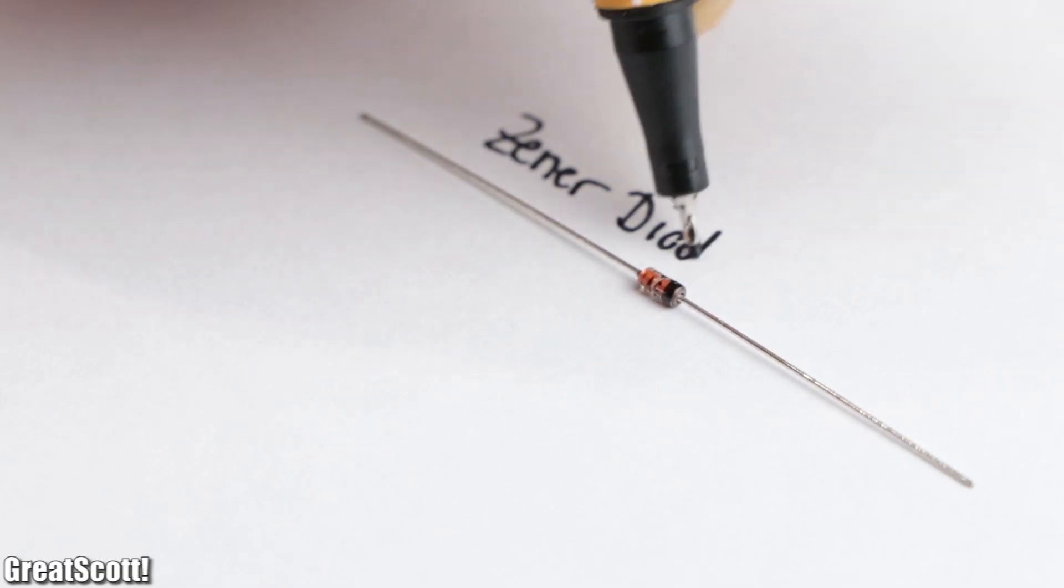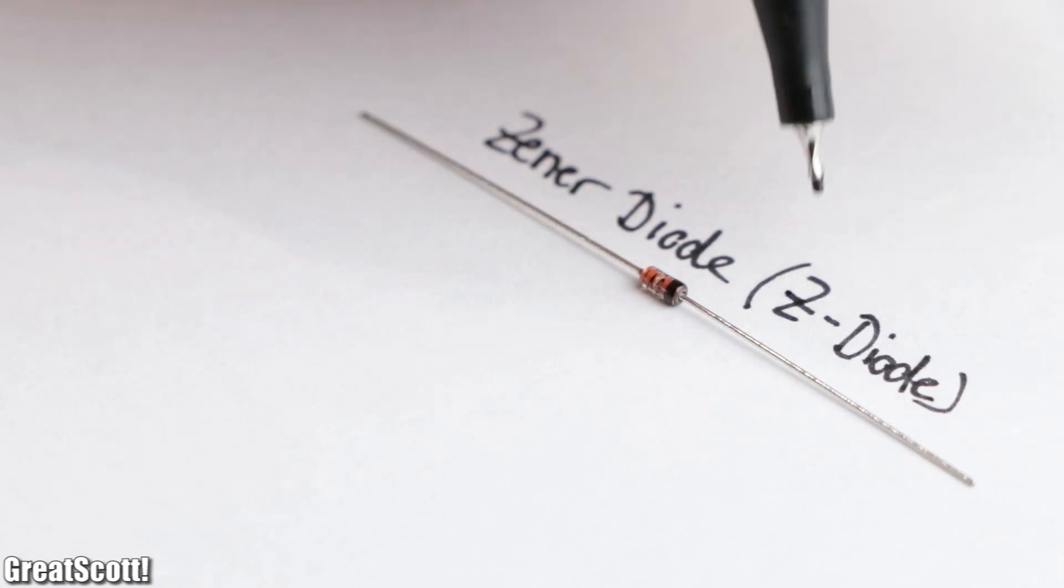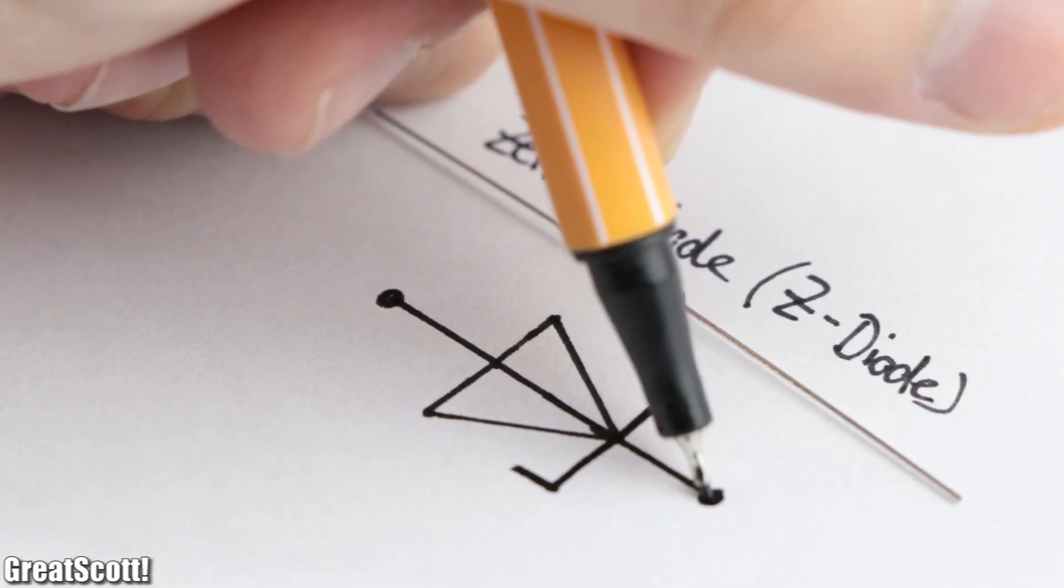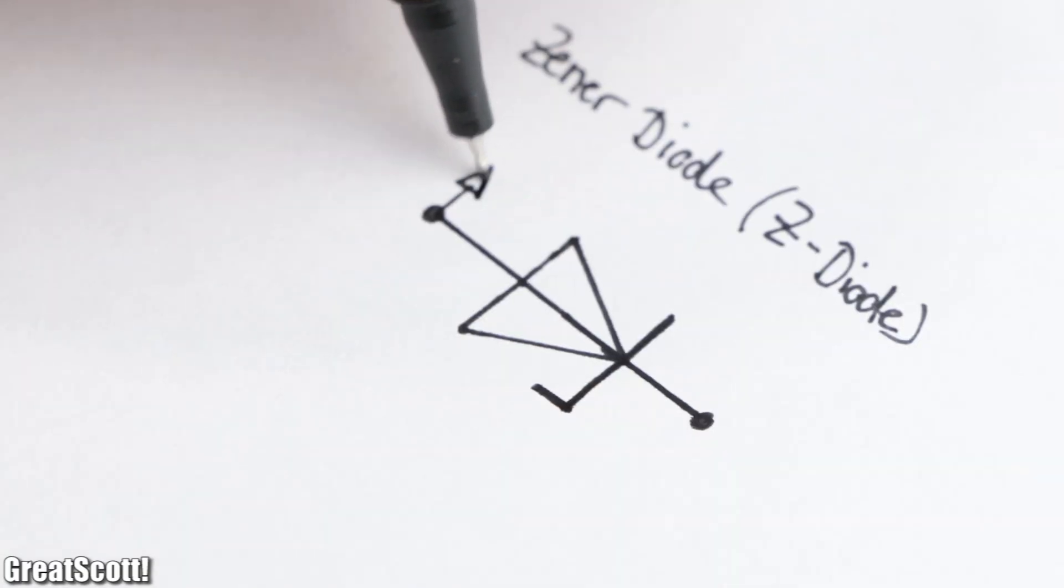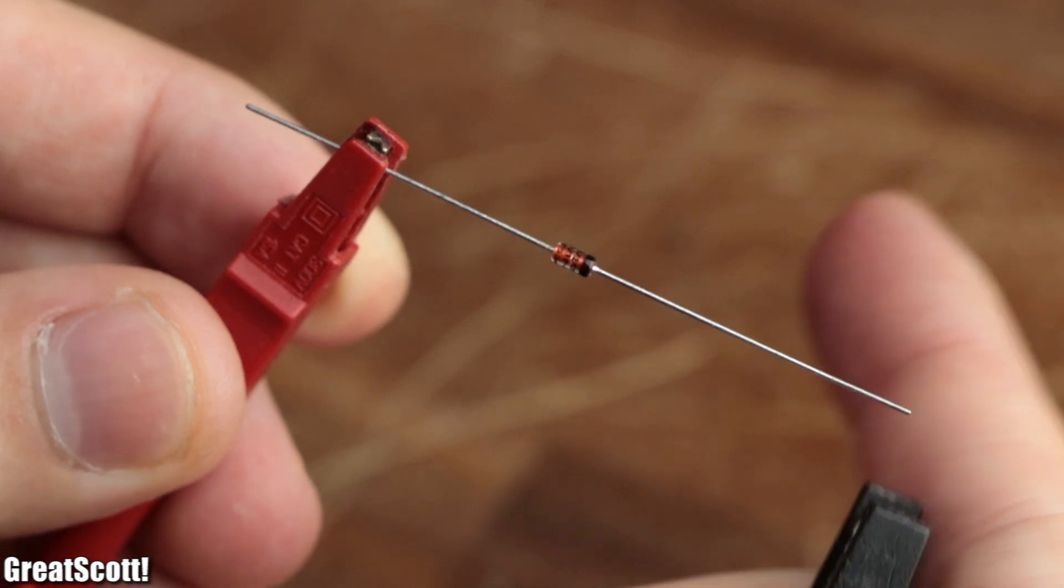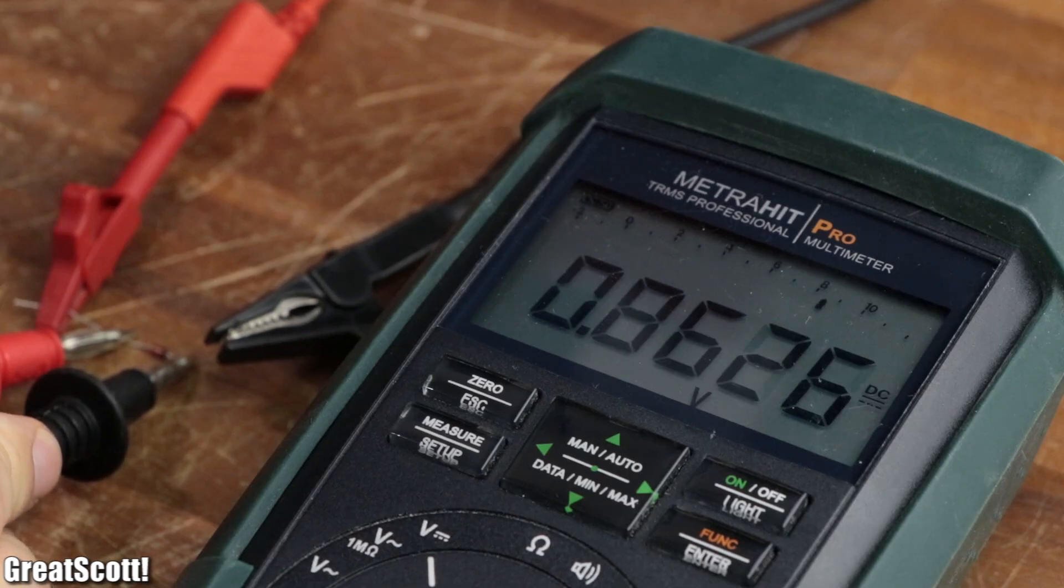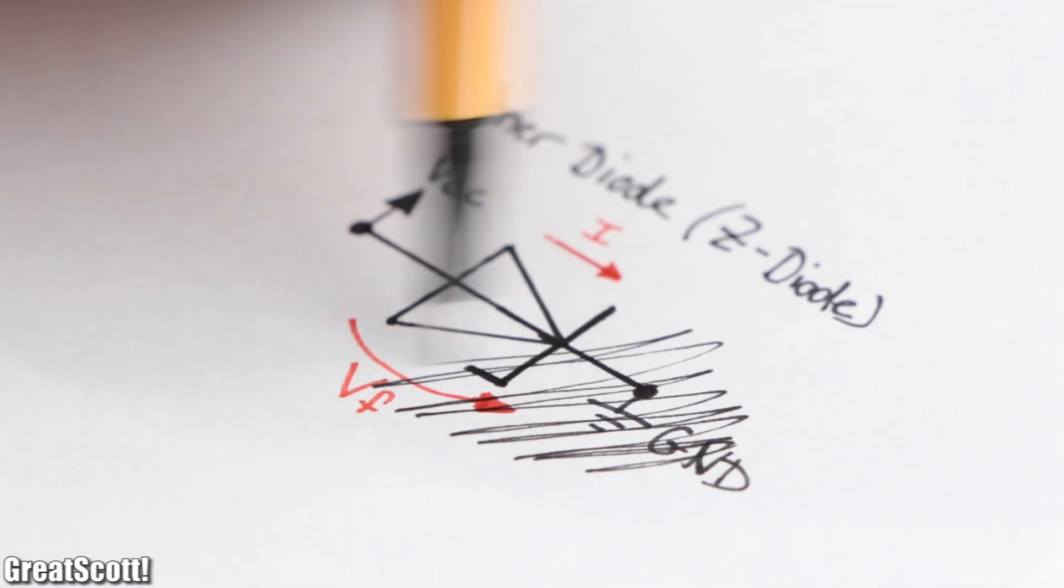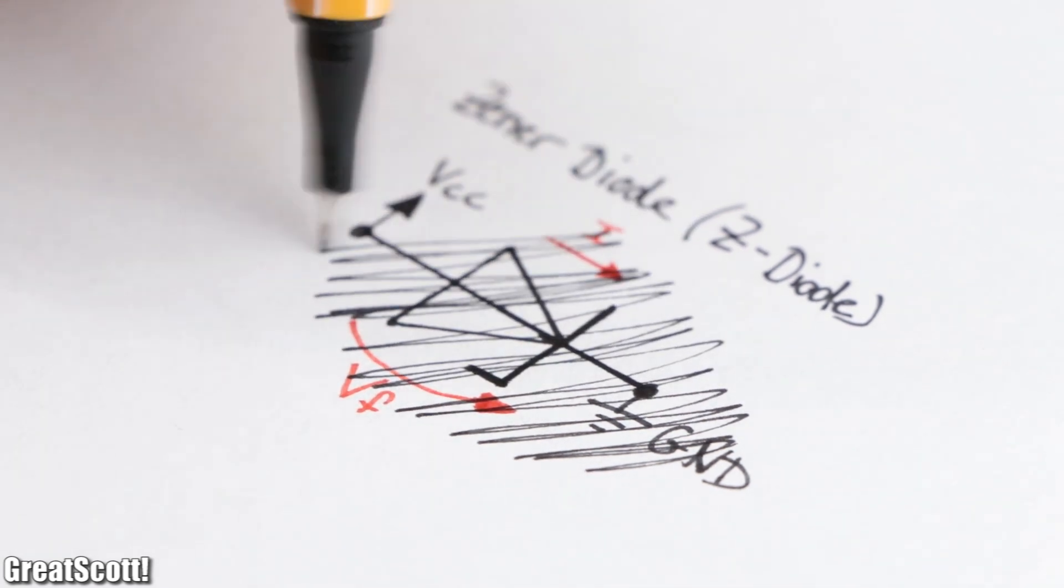Next, we got the Zener diode, also known as Z diode, whose symbol looks like this. Once again, we could simply apply a positive voltage to its anode and a negative voltage to its cathode and use it like a common diode with a comparably high voltage drop. But no one actually uses a Zener diode like this.